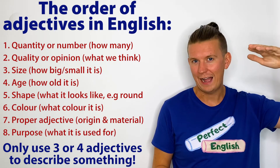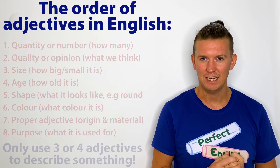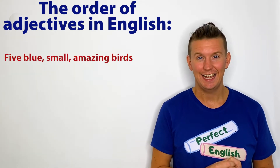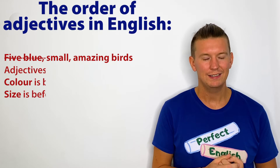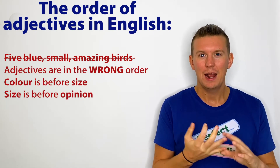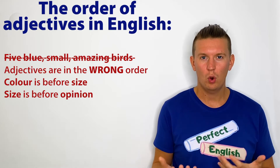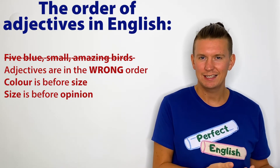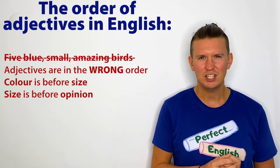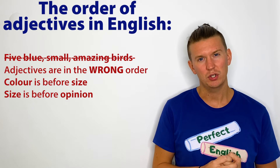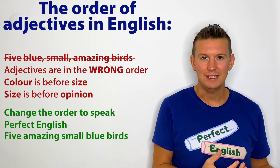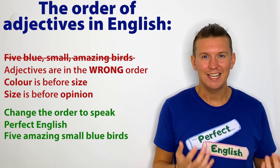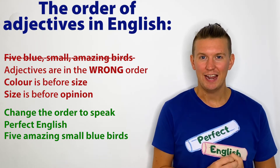Don't put the colour before how many — that's the purpose of this video. Take a look at this sentence: 'Five blue small amazing birds.' This is not right. It doesn't look right, it doesn't sound right, because the adjectives are in the wrong order — colour before size, and size before opinion. We can change the order and make the sentence 'five amazing small blue birds.' This is great English. The adjectives are in the correct order.